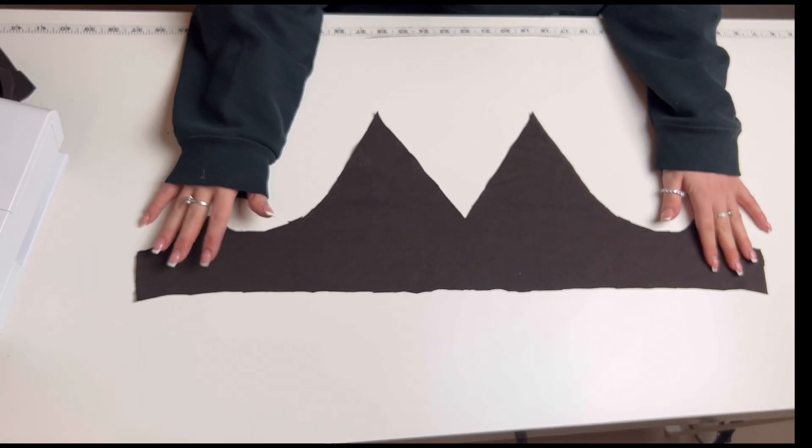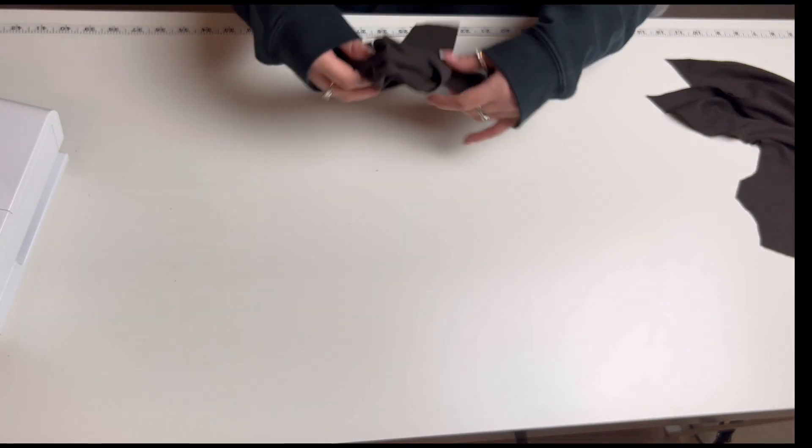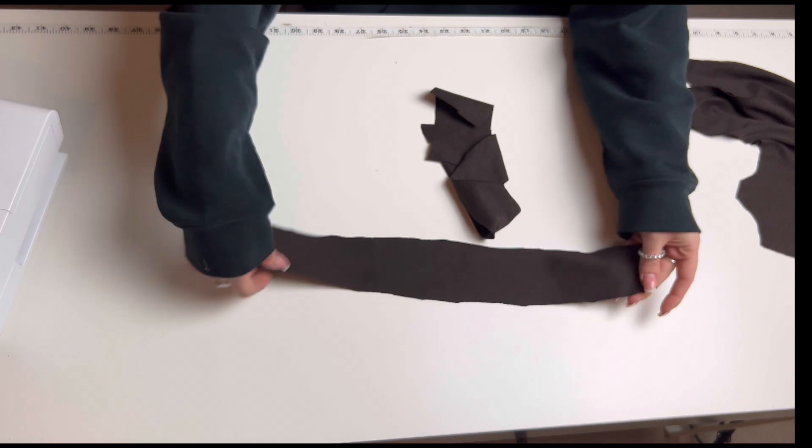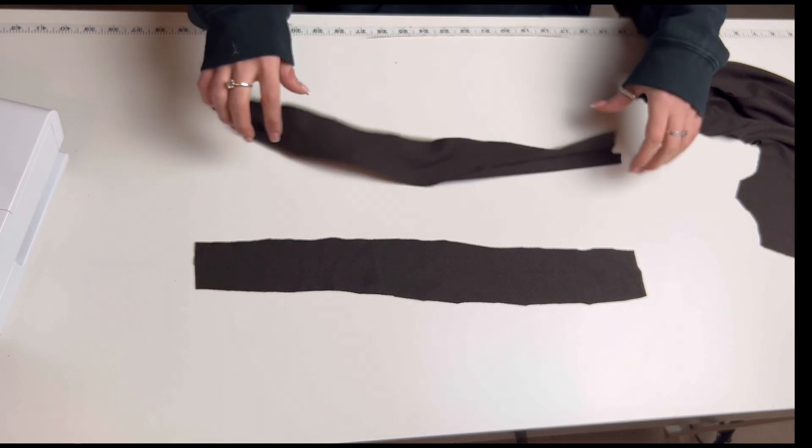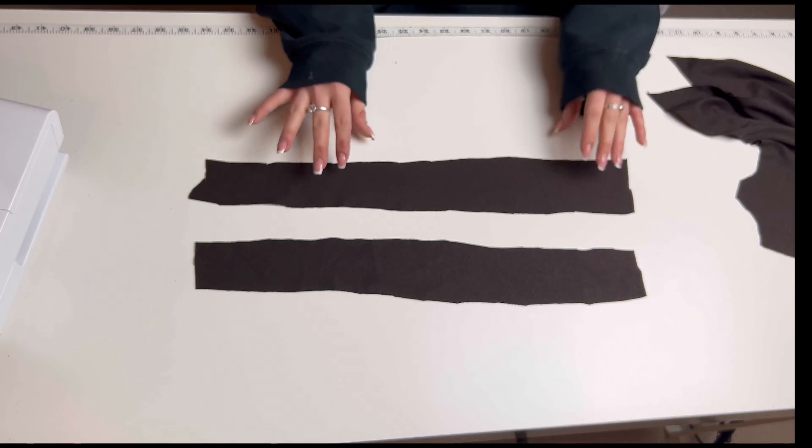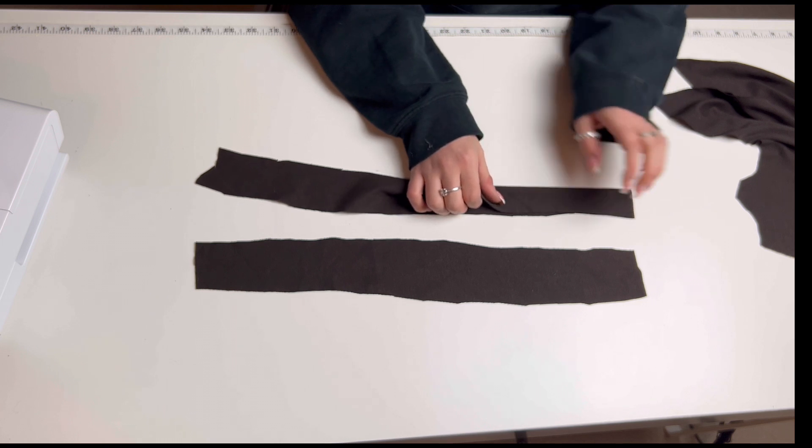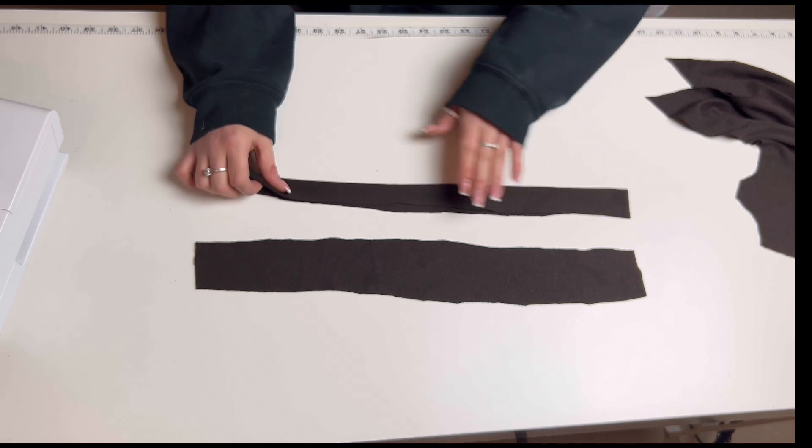Now that we have all of our pieces cut out, ironed and ready, it is time to start sewing. So we're going to start with the bralette. Take your straps and fold them right sides together and serge or stitch down the long edge.